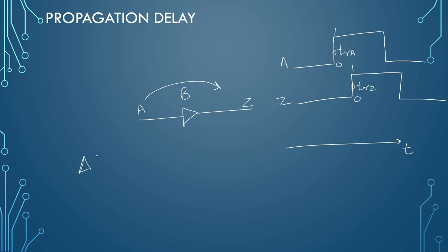Hence, propagation delay, let's say delta T_P will be T_RZ minus T_RA and the 50% of that value that will be 0.5. This is your rise time propagation delay.